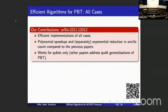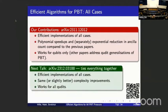Our contributions tackle all the cases: both DPBT cases and both PPBT cases. We also get complexity-theoretic improvements: we show how to do it polynomially faster, and separately how to use exponentially fewer ancilla qubits — giving two different versions of every protocol. The caveat is that ours only works for qubits, whereas the other papers address qudit generalizations. The talk immediately following from Dimitri covers their second work, which ties everything together with the same or slightly faster complexity and addresses all the qudit cases.